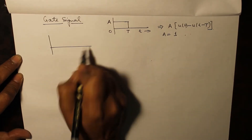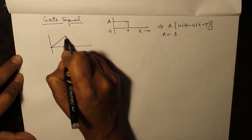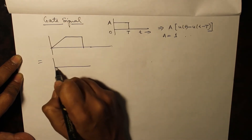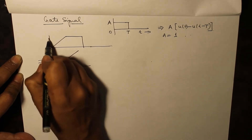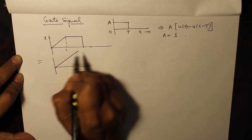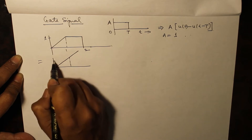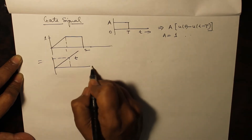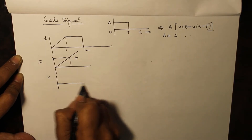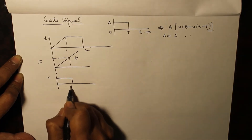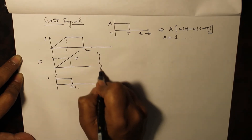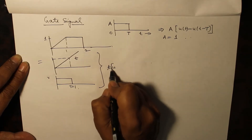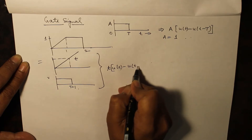If we have any waveform, for example this waveform, what we can do is take a signal of slope 1. This function will be written as t. To this signal we multiply a gate up to t equal to 1. On multiplication of these two signals we get t·u(t) minus u(t minus 1).